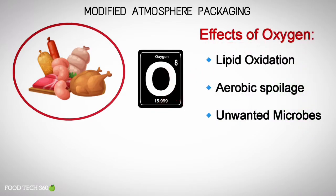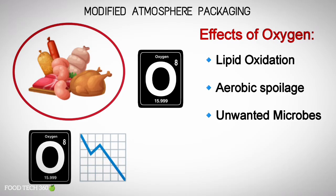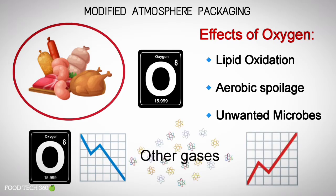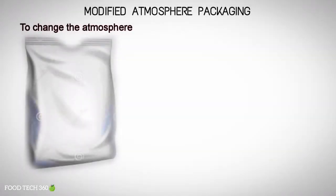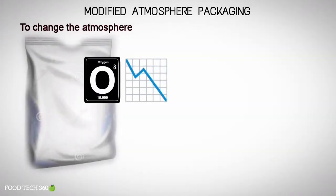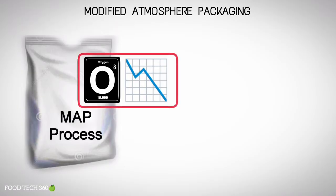Oxygen produces lipid oxidation reactions. The presence of oxygen encourages the growth of aerobic spoilage microorganisms, and the potential formation of other unwanted microorganisms may also occur. By reducing the amount of oxygen and replacing it with other gases, we can reduce or delay unwanted reactions. To change the atmosphere of a package, the oxygen contained within must be reduced or removed. The MAP process lowers the volume of oxygen in the empty space of the packaging containing the product.